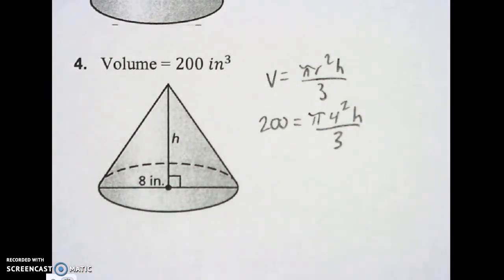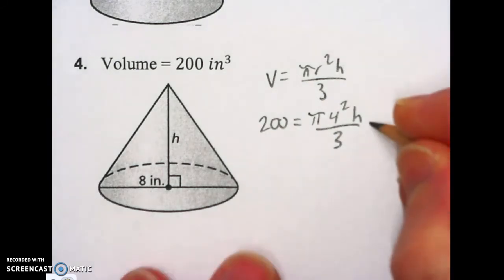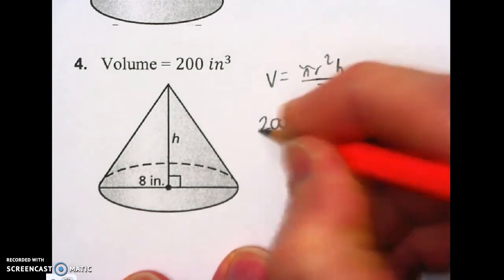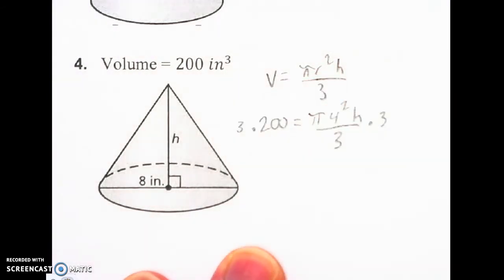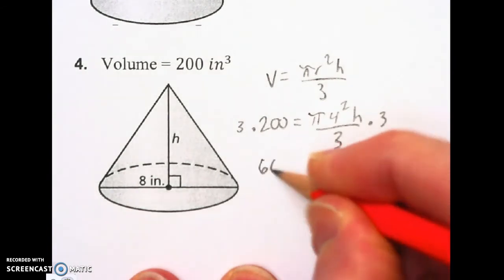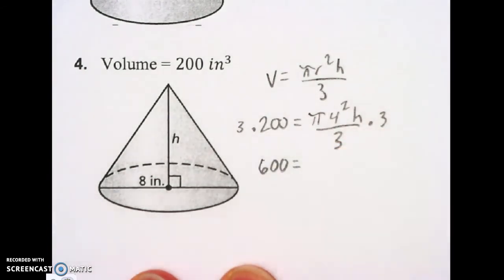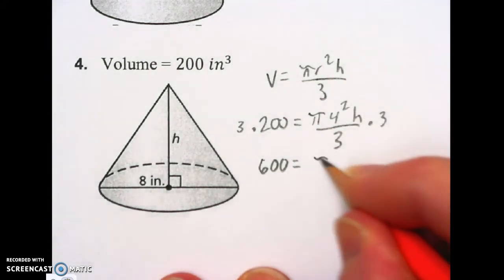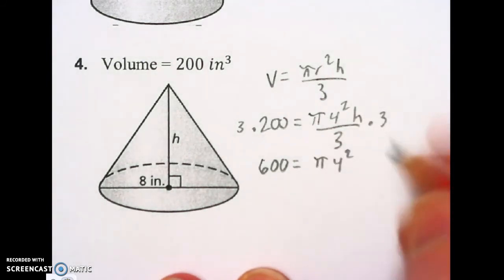First thing I'm going to do to make this problem a little bit easier is to get rid of this divide by three. I'm going to times both sides by three. So that's going to get me 600 over here. And that's going to get me on this side pi four squared H. The three is canceled out right here.